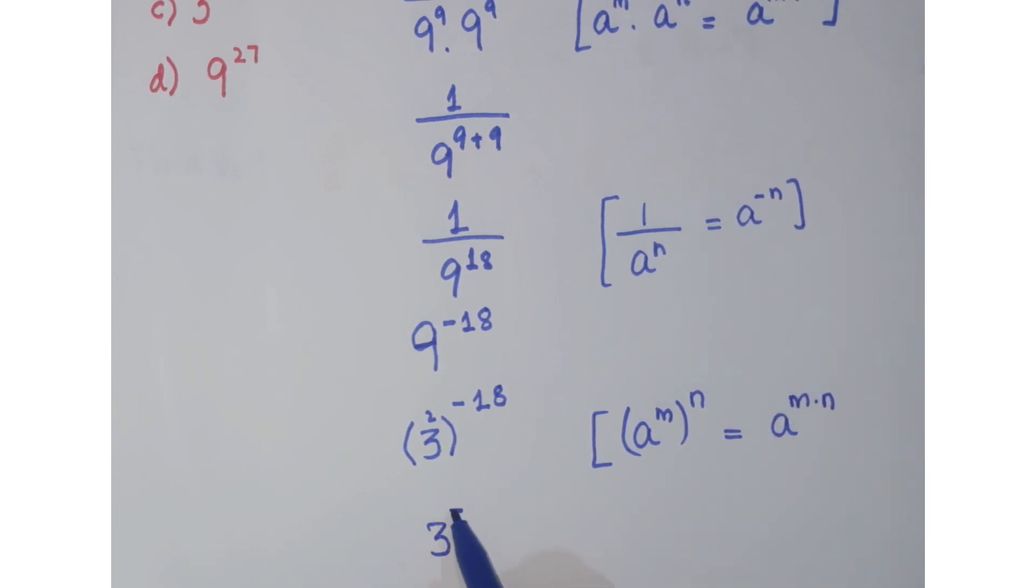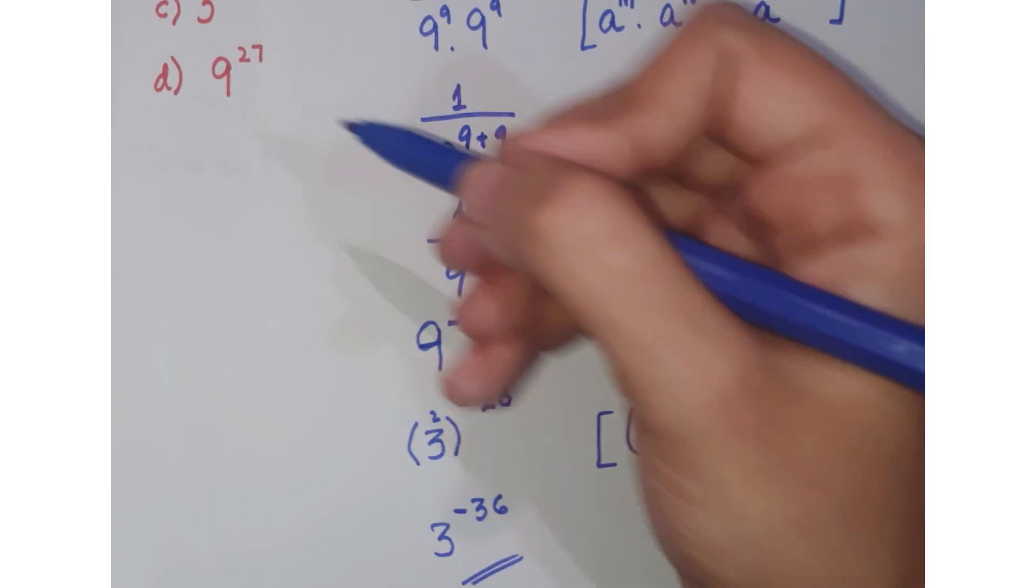So we get the answer 3 to the power minus 36, and this is our required answer. The correct option is C.